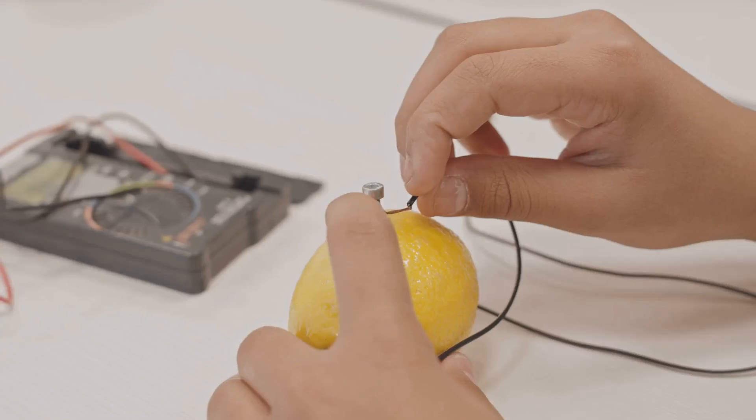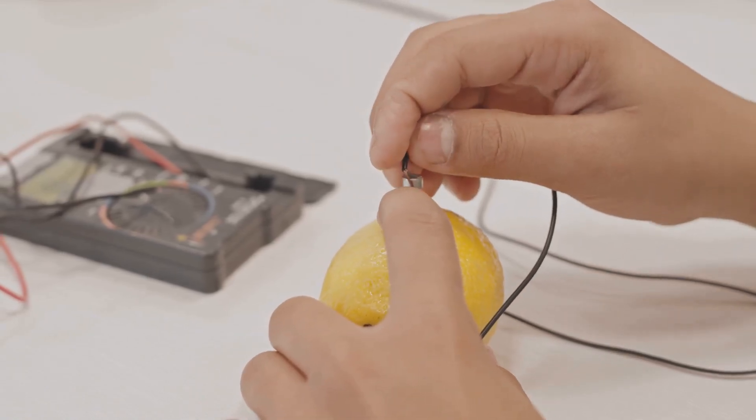This loop is free to spin. It's crucial for the motor's operation. When electricity flows through the loop, it becomes an electromagnet.